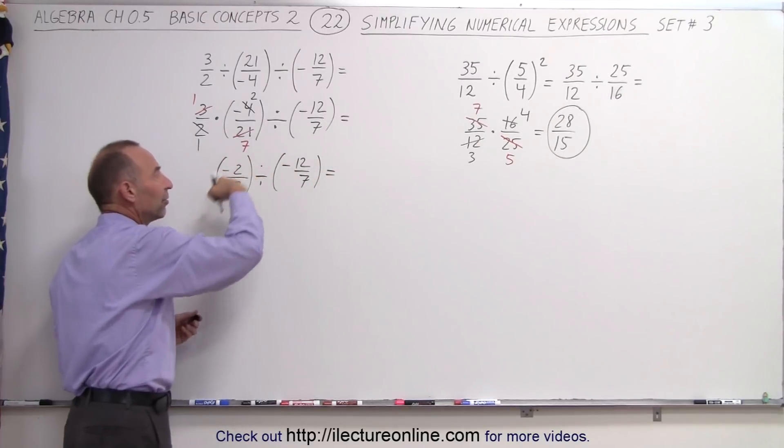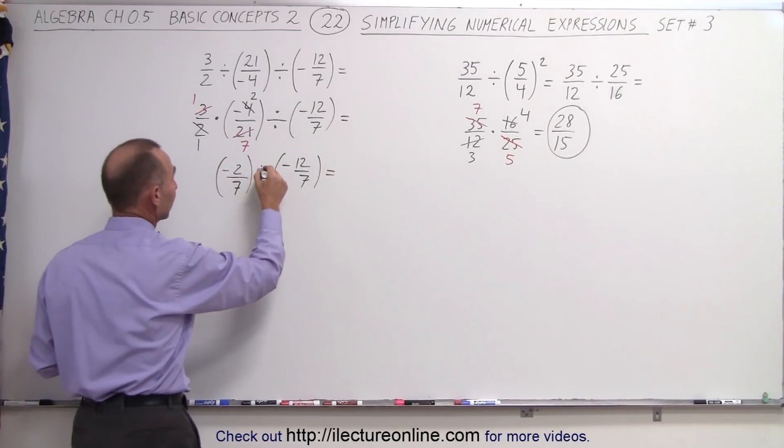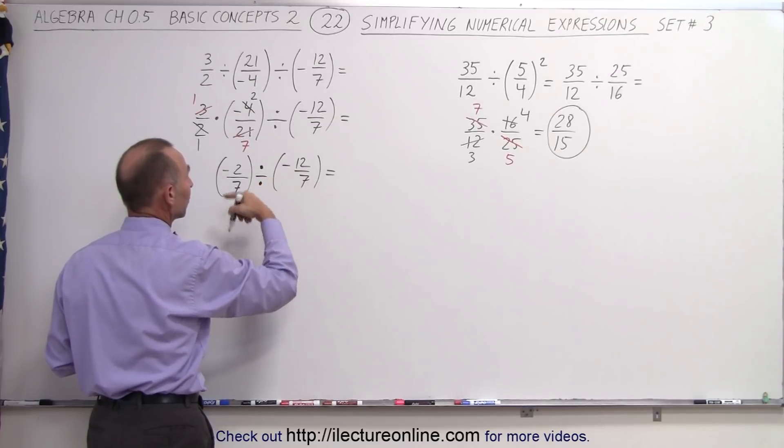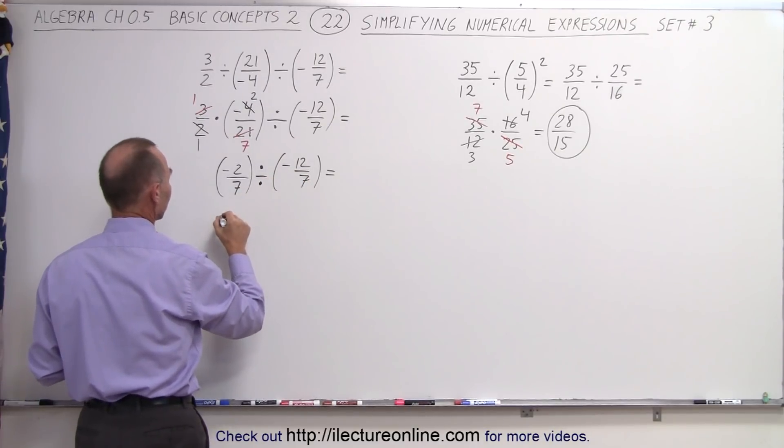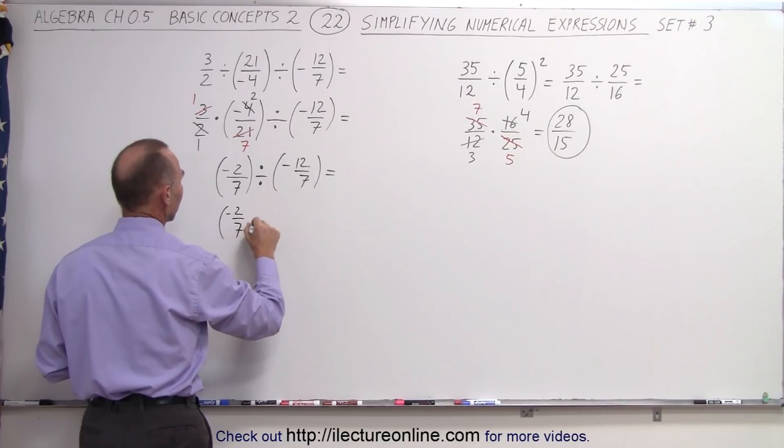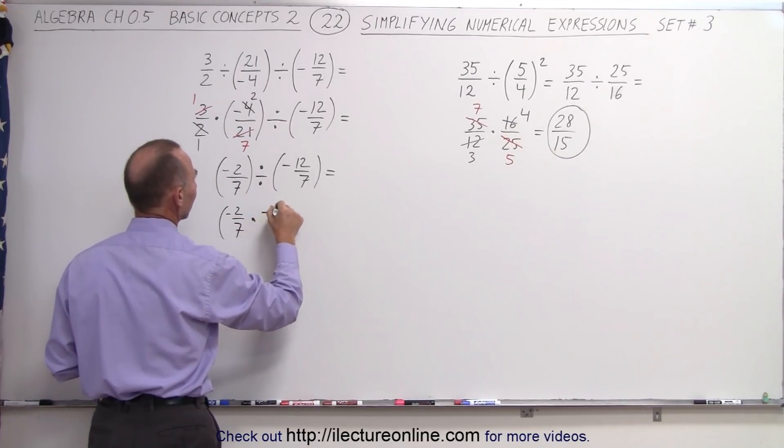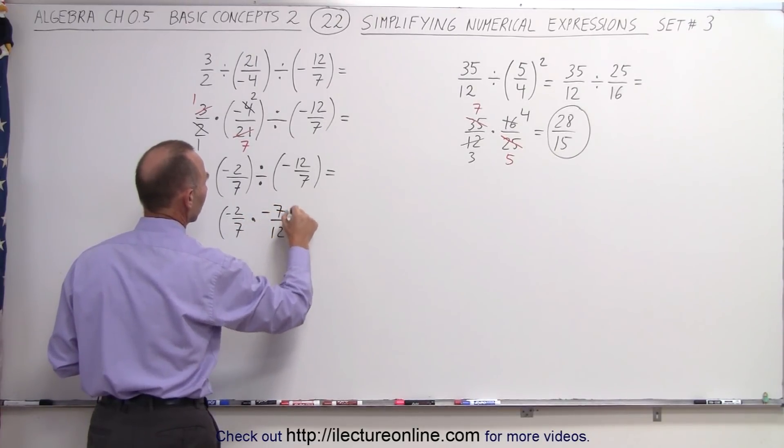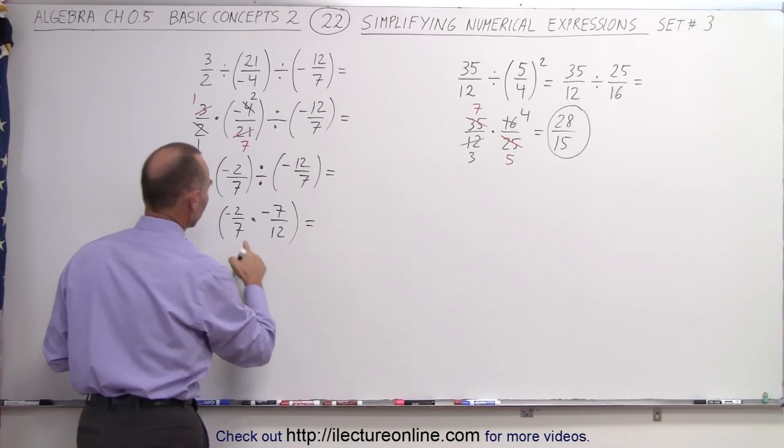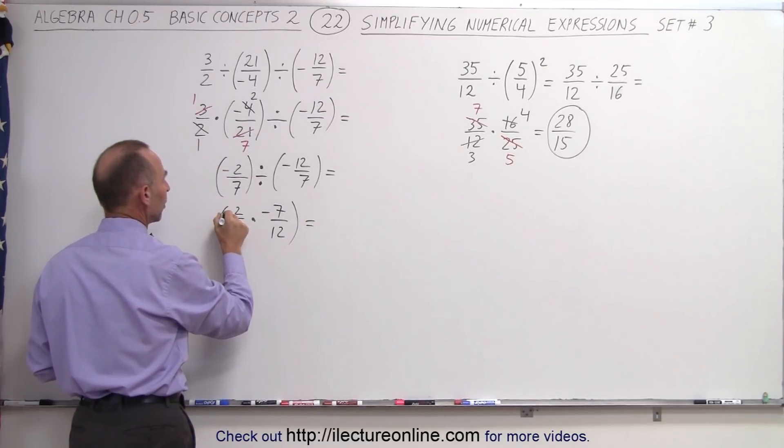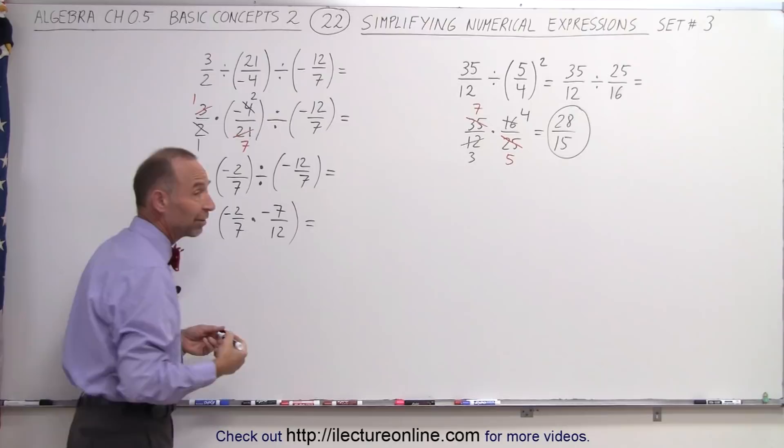Now we can go ahead and take care of this right here. Notice when we divide by fraction, it's the same as multiplied by inverse, so this can be written as negative 2 over 7 times negative 7 over 12. Notice we have a multiplication. Both numbers are negative, and negative times a negative gives us a positive.